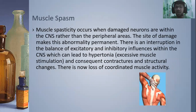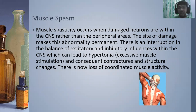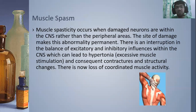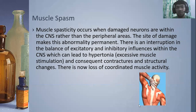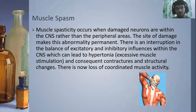Muscle spasticity occurs when damaged neurons are within the CNS rather than the peripheral areas. The site of damage makes this abnormality permanent, unlike other causes of muscle spasm. There is an interruption in the balance of excitatory and inhibitory influences within the CNS, which can lead to hypertonia or excessive muscle stimulation, and consequent contractures and structural changes may occur. There is also a loss of coordinated muscle activity. Muscle spasticity results from permanent damage to neurons, and once neurons are damaged, they can no longer be repaired.